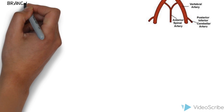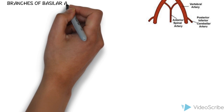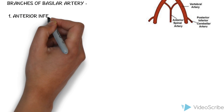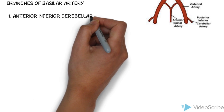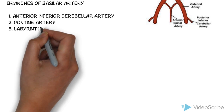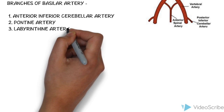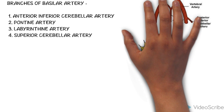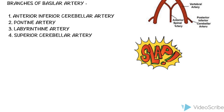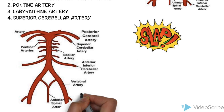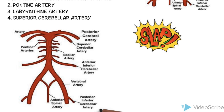The branches of the basilar artery are: the anterior inferior cerebellar artery, the pontine artery, the labyrinthine artery, and the superior cerebellar artery. You can memorize these using the mnemonic SLAB. In this diagram we can appreciate all the branches of the basilar artery.